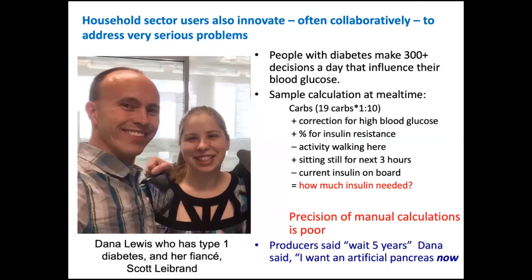A sample calculation for a meal: they have to correct for their present blood glucose level, factor in their insulin resistance, whether they have activity planned, whether they're sitting still or moving, and how much insulin they have on board. The problem is these manual calculations are imprecise and people make mistakes. About one out of 20 Type 1 diabetics over their lifetimes dies from a mistake.